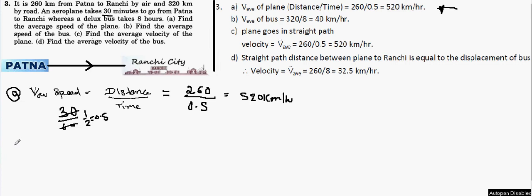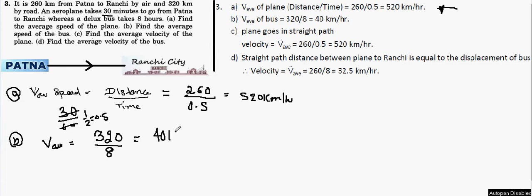Now let's talk about the bus. For the bus, the average speed = distance / time = 320 kilometers divided by 8 hours. Dividing gives us 40 kilometers per hour. That is the average speed of the bus.